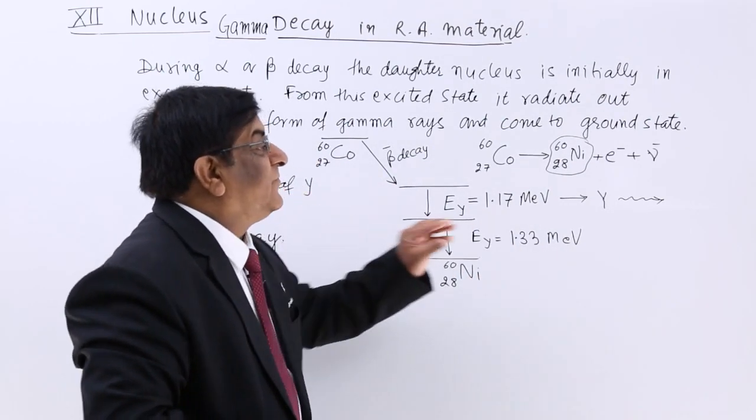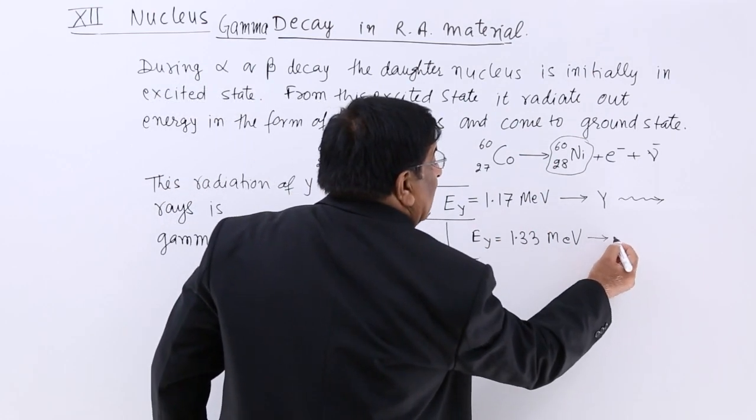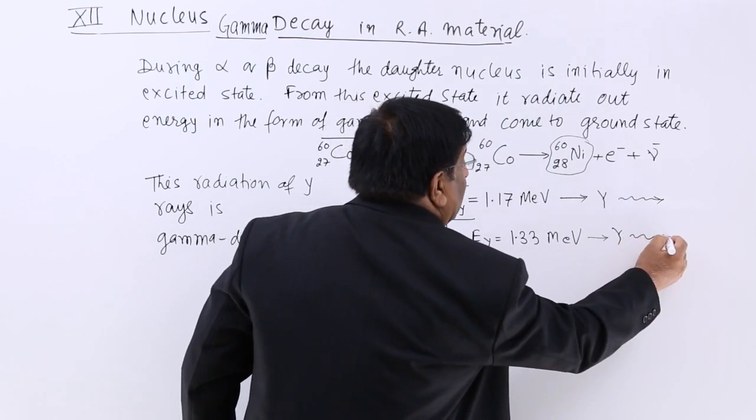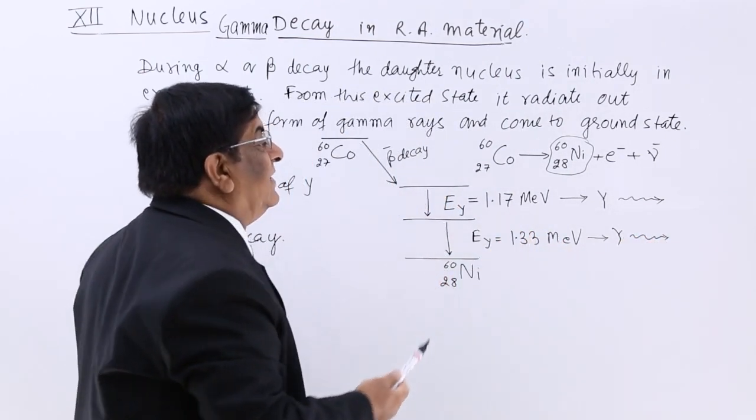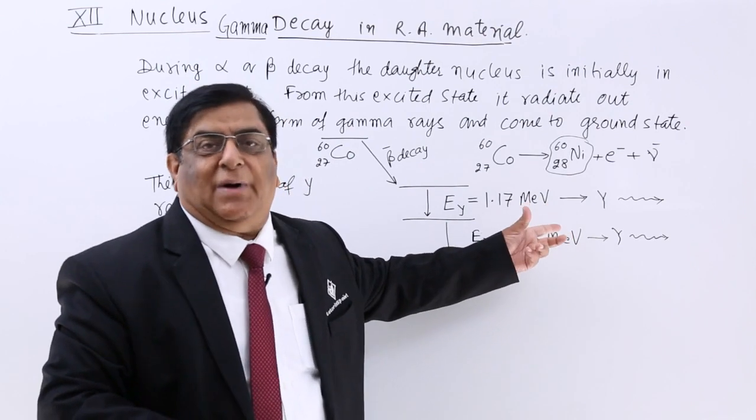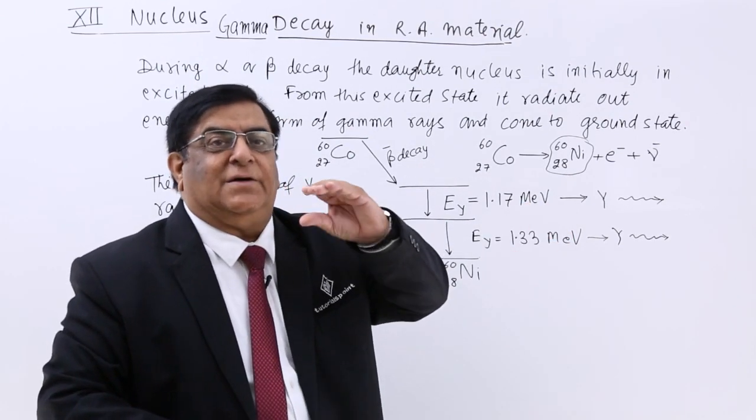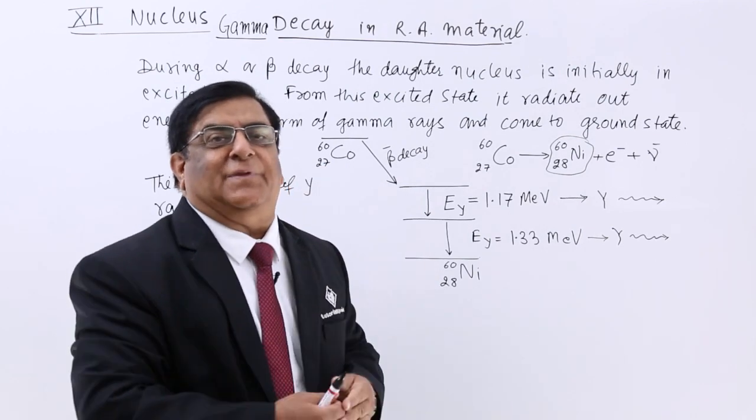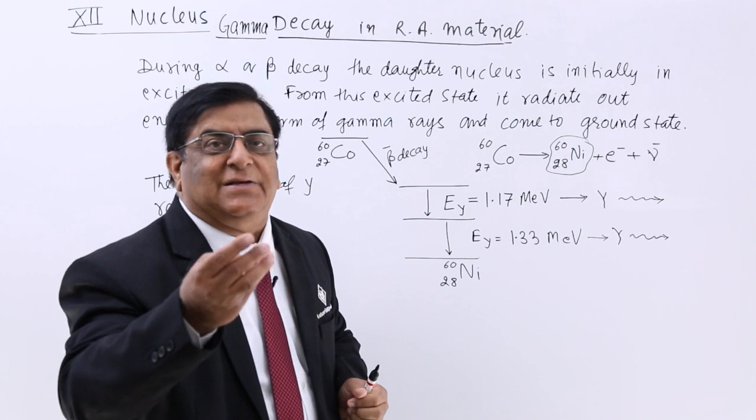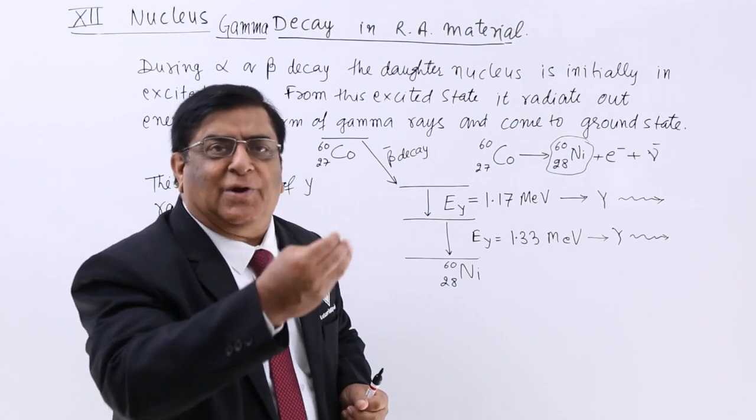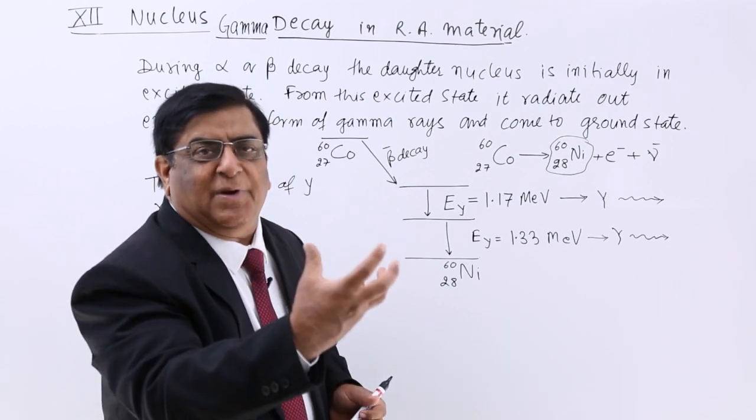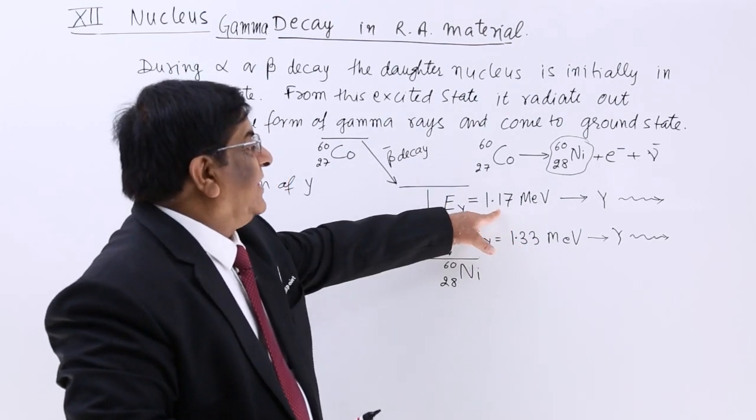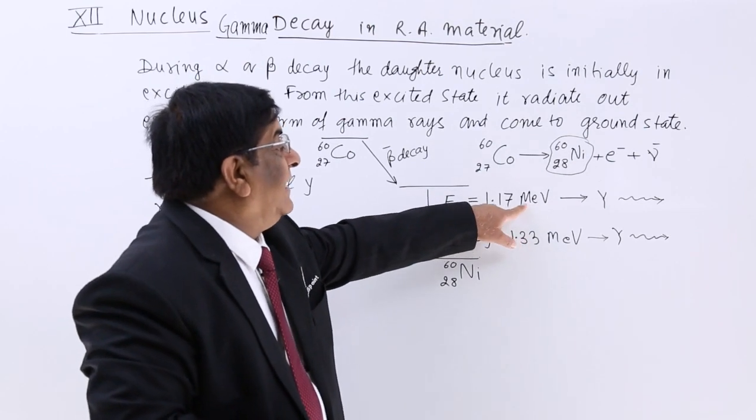After that another photon comes out and that photon has energy 1.33 million electron volt. And it is because of this energy we have given it the name of gamma because we have made separate range of different energy carrying photons and we have given them the name gamma rays, x-rays and below that ultraviolet rays then the visible rays like that. So these are the photons of gamma because they carry such large amount of energy million electron volt.